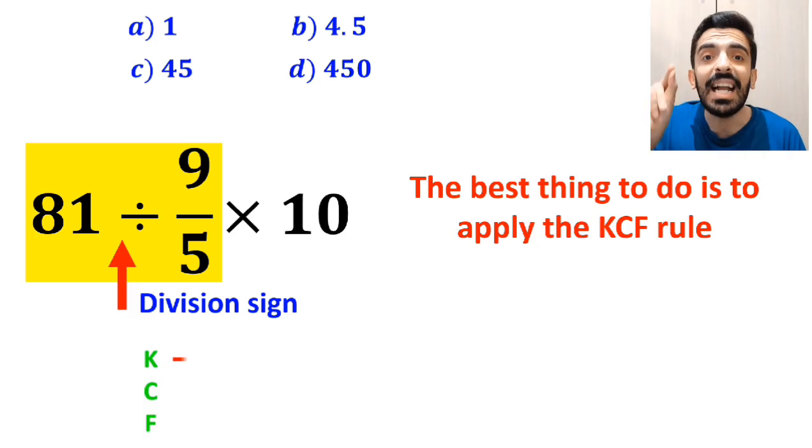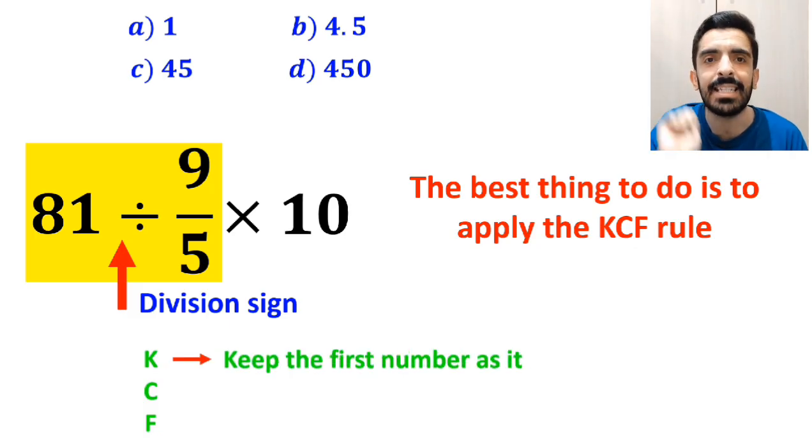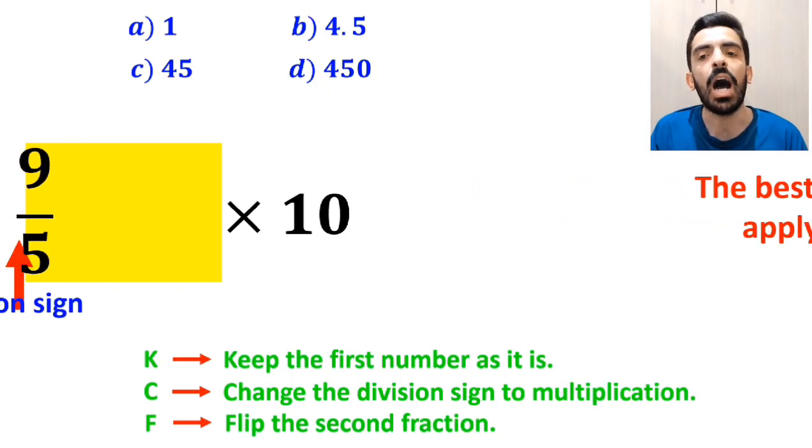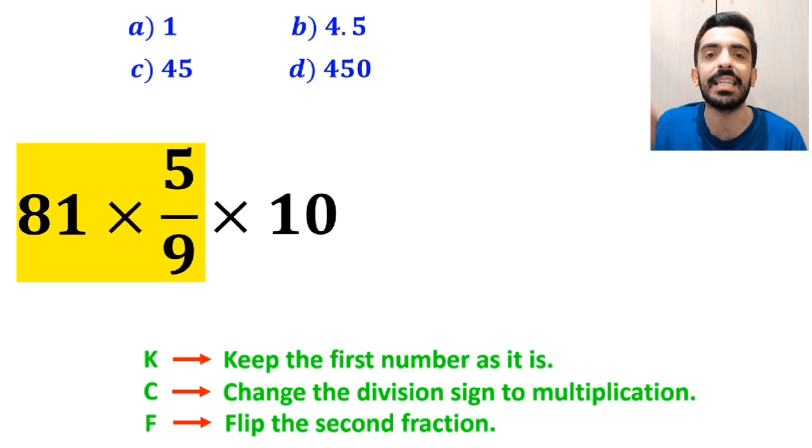In this rule, K stands for keep the first number as it is, C stands for change the division sign to multiplication, and F stands for flip the second fraction. So we remove the highlighted part and write this expression as 81 times 5 over 9 multiplied by 10.